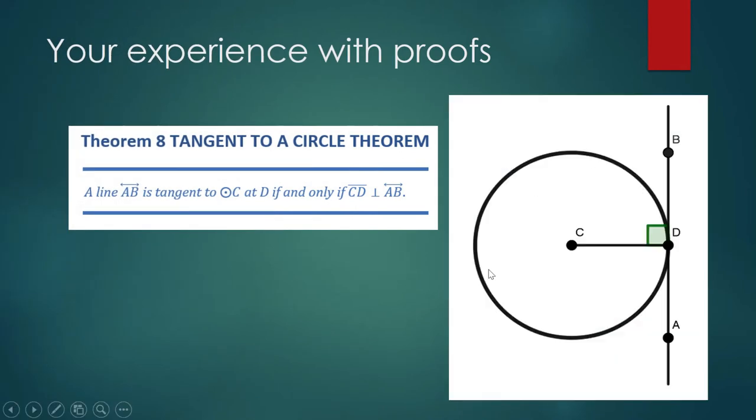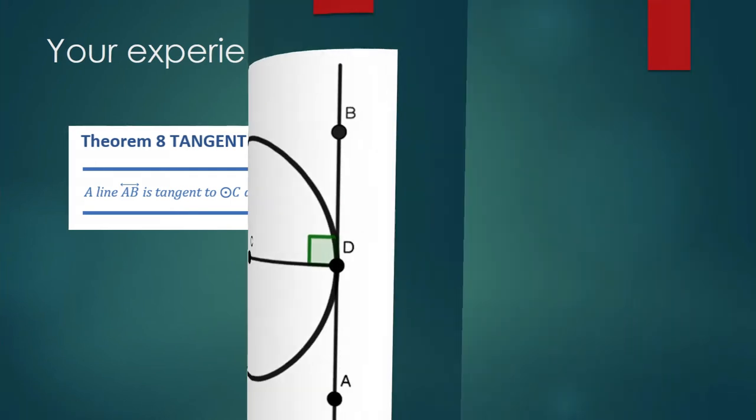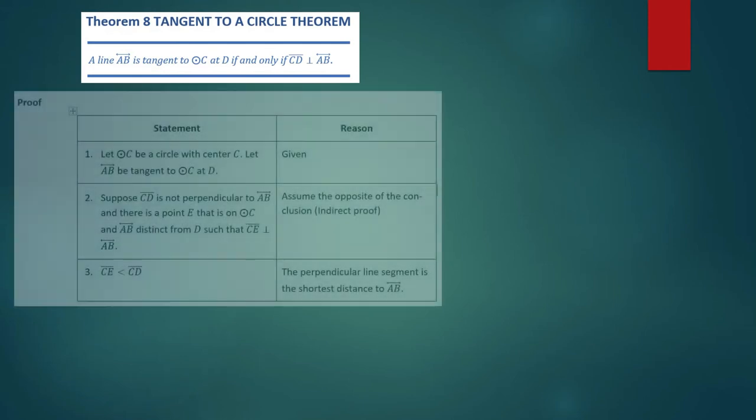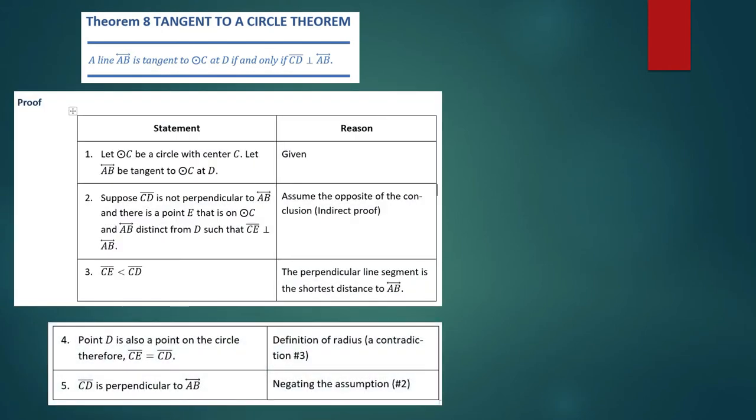The illustration for that theorem is this: if you have a circle with center C, this line AB is tangent to C at point D, if and only if this line and that line, which is the radius of your circle, are perpendicular to each other, or if they form a right angle. And so you were challenged by your teacher to produce a proof and you accepted the challenge.